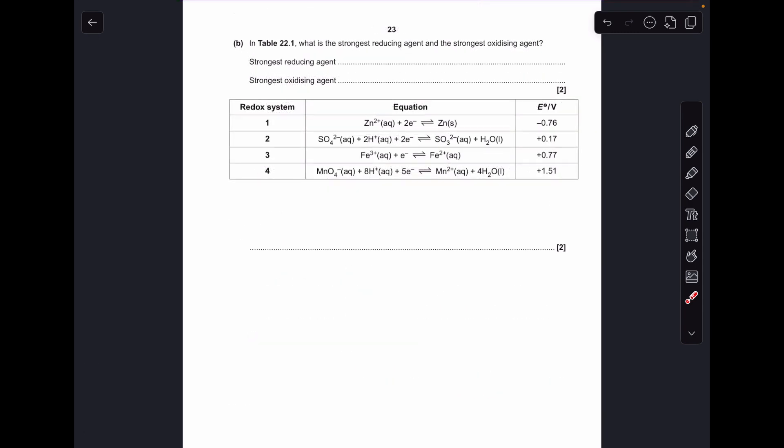Moving on to part B, so I've just copied the table again to save me going backwards and forwards. So the strongest reducing agent, well, what's a reducing agent? It's an electron donor, so the reducing agents are all on this side of these half equations. And the strongest one is going to be the one that gives up its electrons most readily. So it's the most negative one. So that means it's zinc.